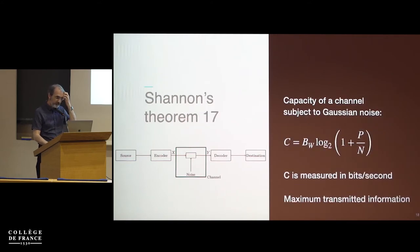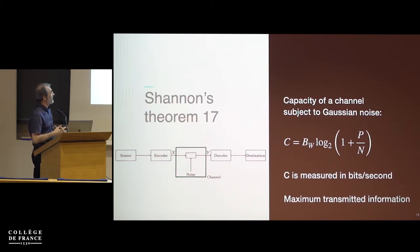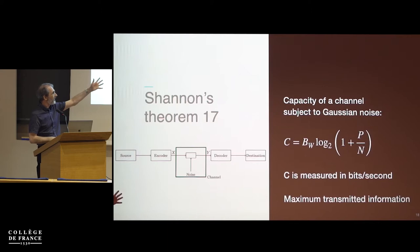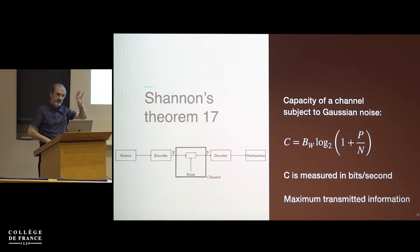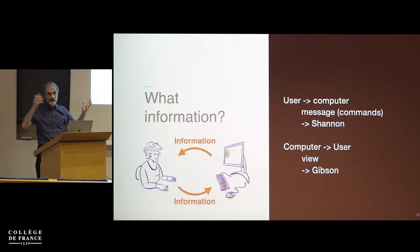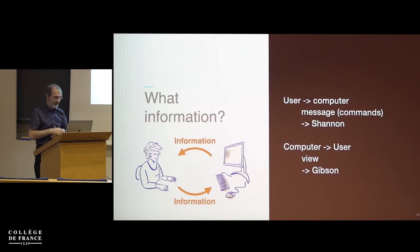The really important contribution of Shannon is formalizing information transmission: a source emits a message, the encoder encodes it efficiently using probability distributions, it travels over a noisy channel where some information may be lost or changed, and the decoder reconstructs it for the destination. Shannon's Theorem 17 gives the capacity of a channel subject to Gaussian noise: capacity equals bandwidth multiplied by log(1 + P/N), where P is signal and N is noise — the maximum transmitted information.